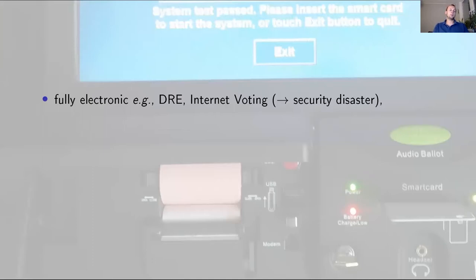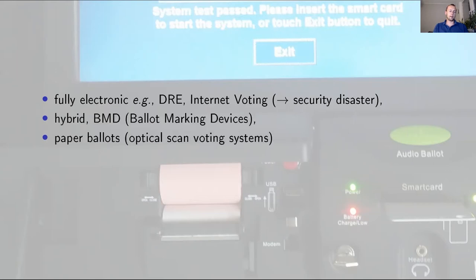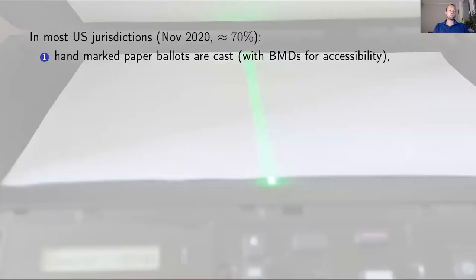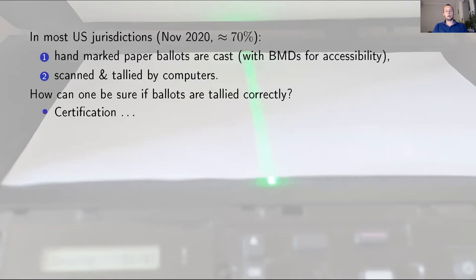There are many different voting technologies out there. Some of them are fully electronic, like DRE machines and most internet voting solutions. There are some hybrid, and fortunately, most of the voting systems use paper ballots. But because paper ballots and the ballot design can be really complicated, even if ballots are cast and marked by hand of voters, these ballots are scanned and tallied by computers. So we are back in computer security problem, because we cannot be sure if ballots are tallied correctly.